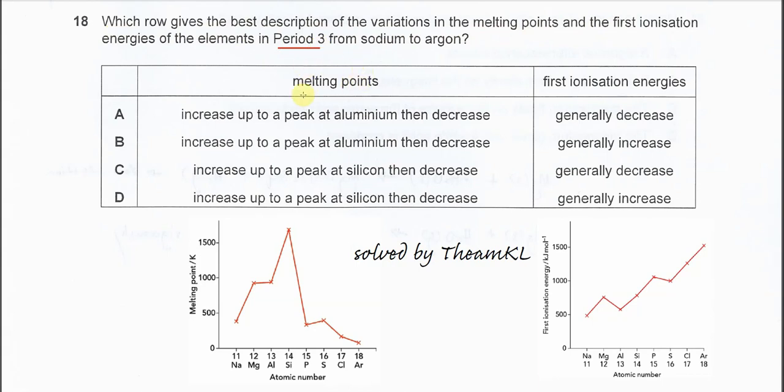First is the melting point. Melting point, we know that if you increase up to silicon, then it will decrease.